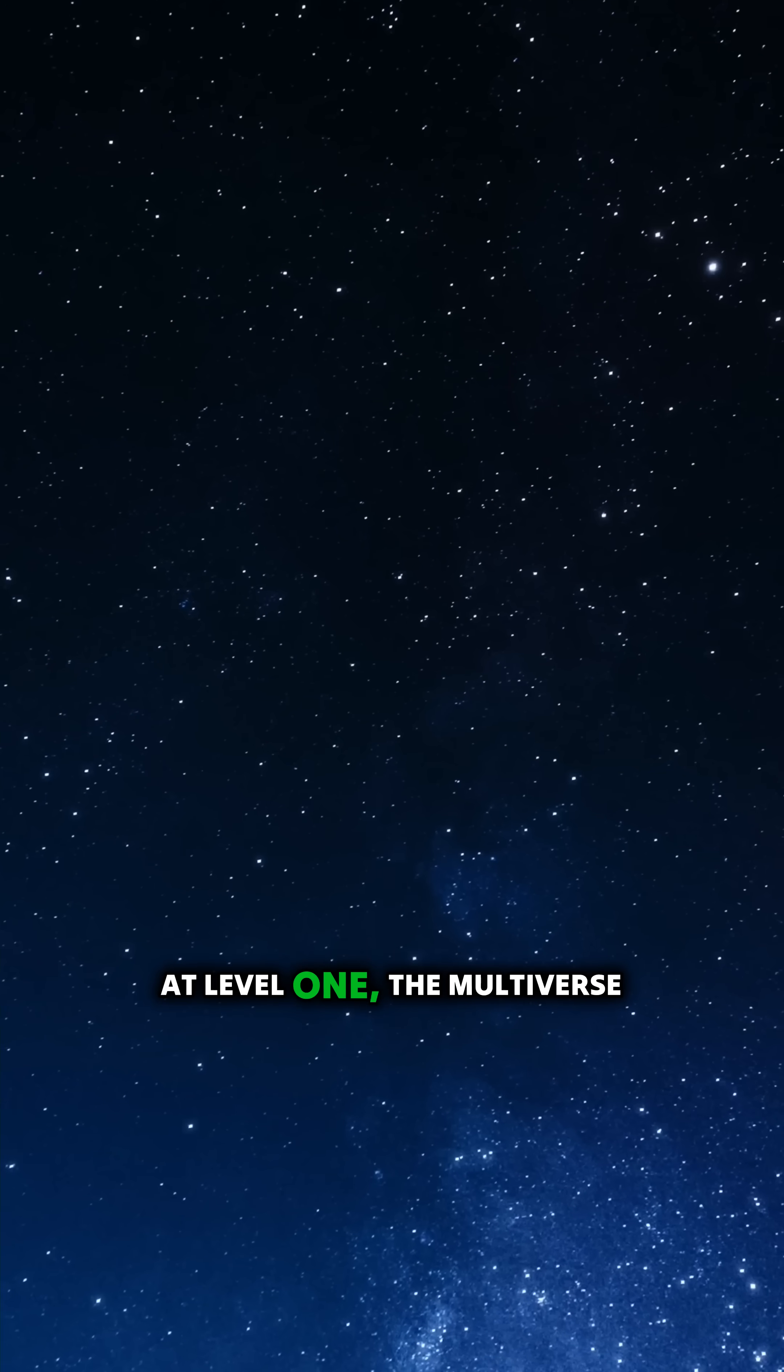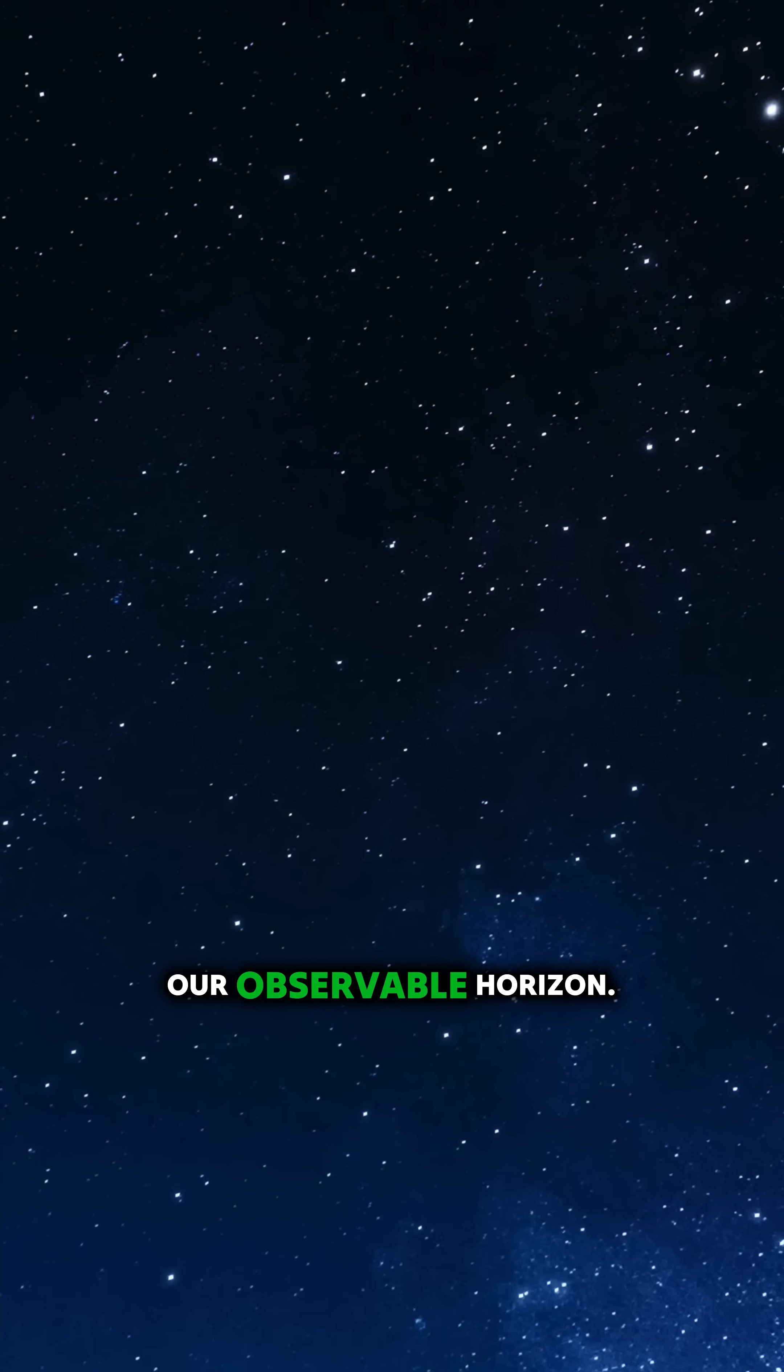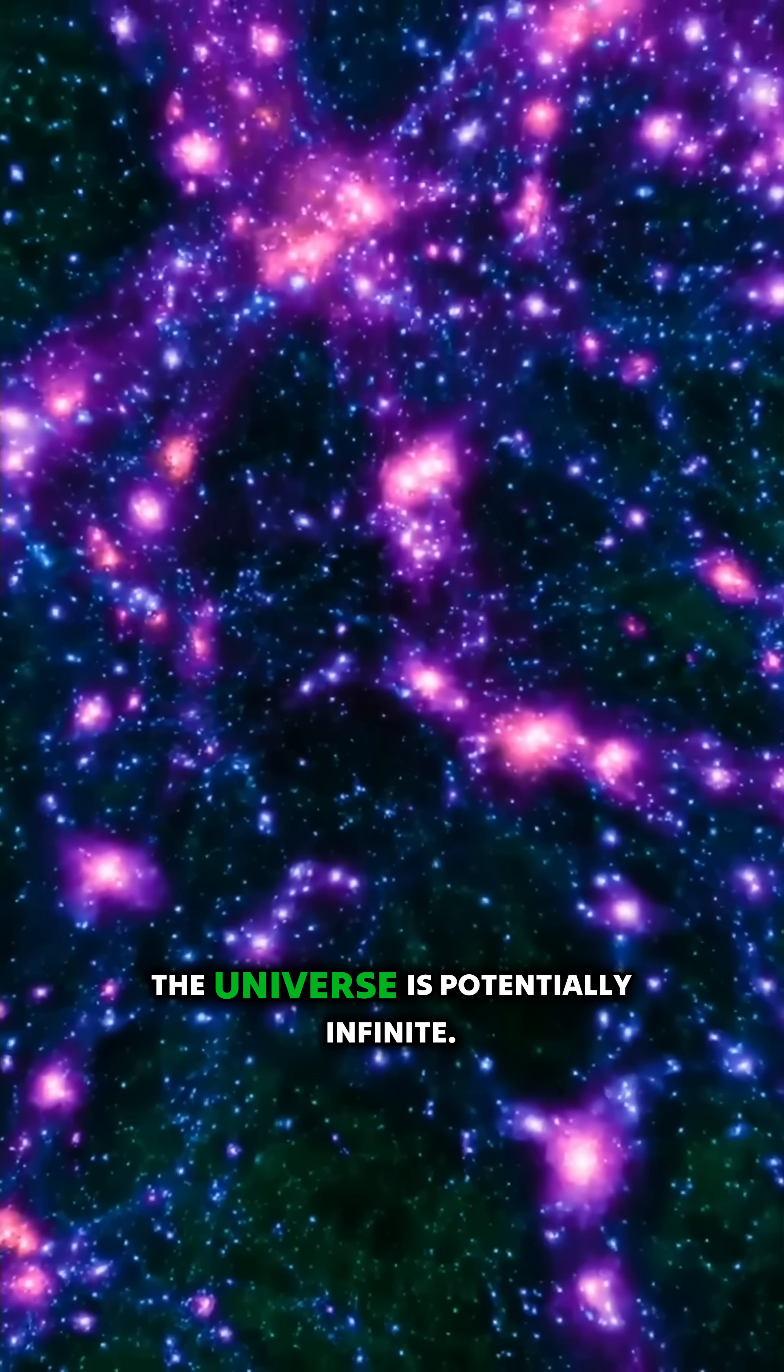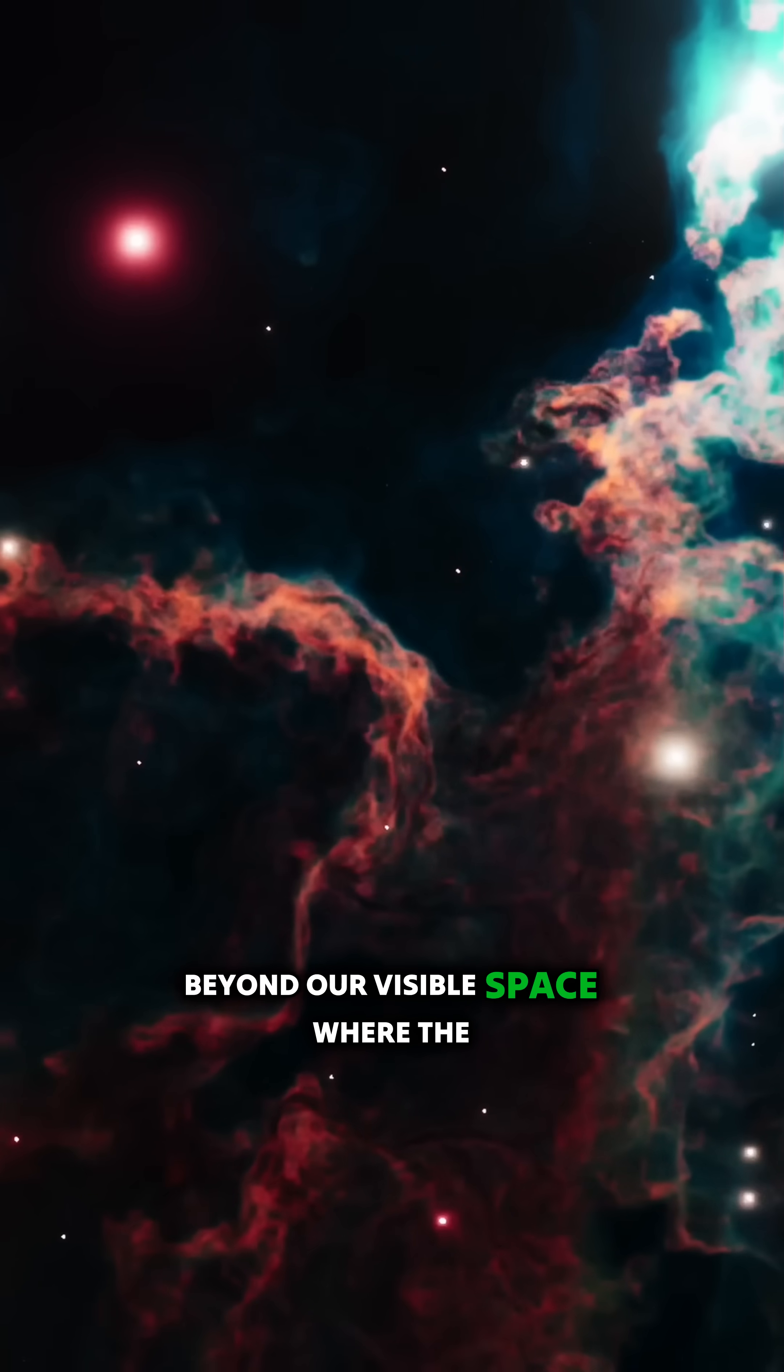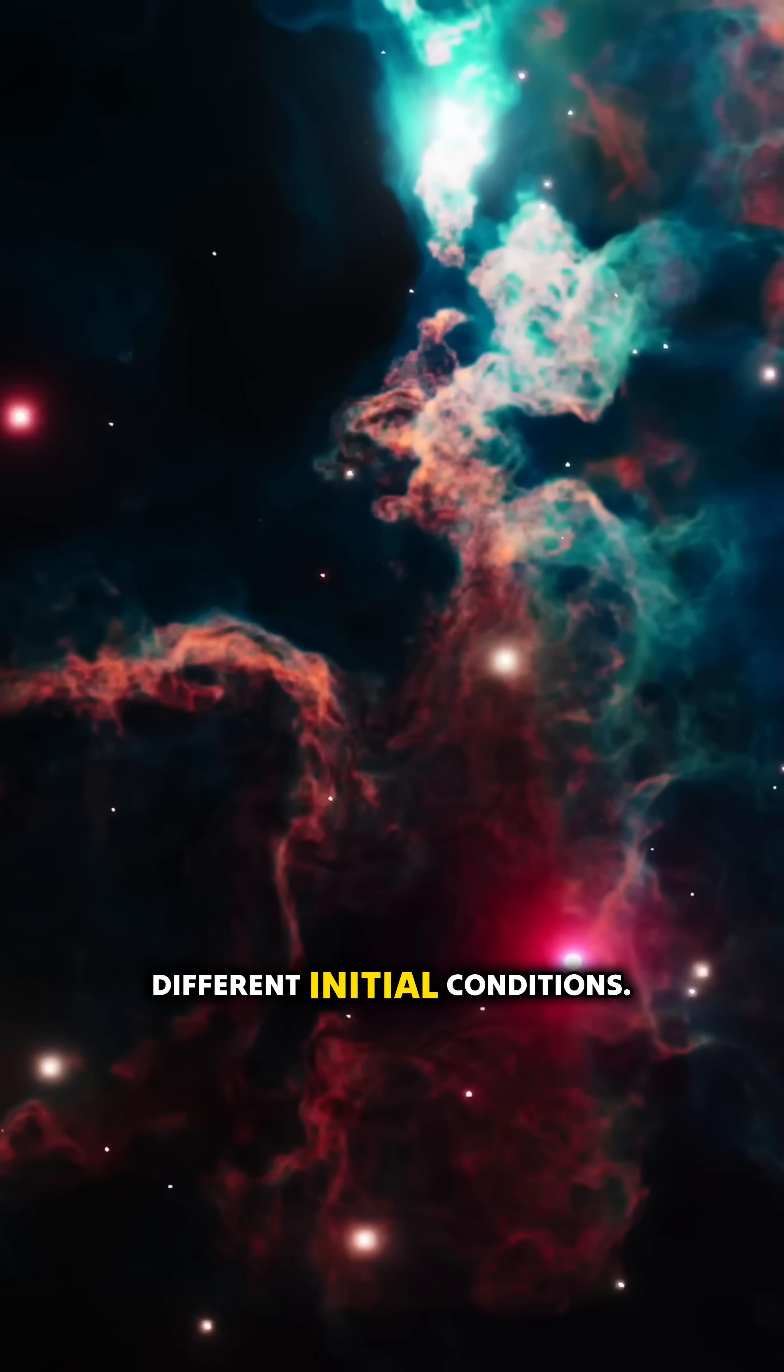At level one, the multiverse consists of regions of space beyond our observable horizon. According to cosmological models, the universe is potentially infinite. If so, there exist countless regions beyond our visible space where the same physical laws apply, but with different initial conditions.